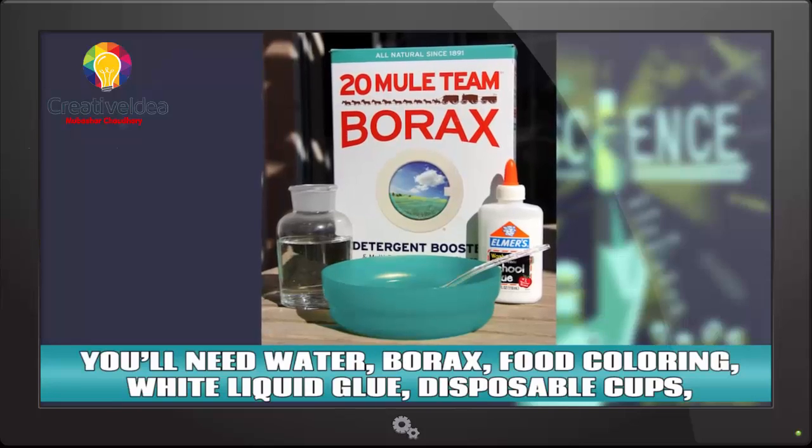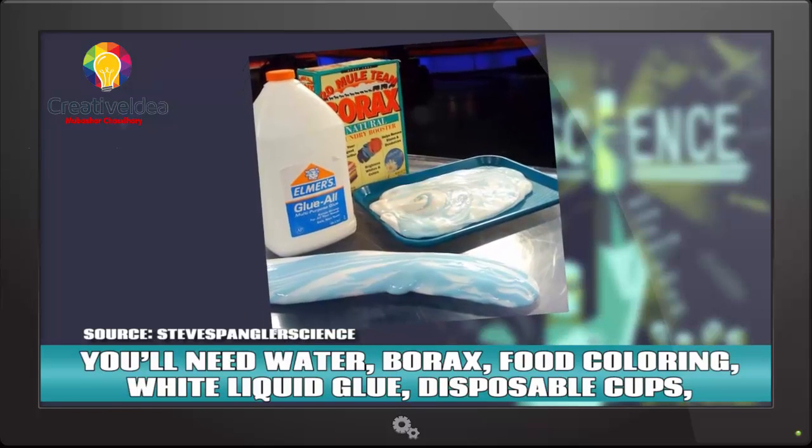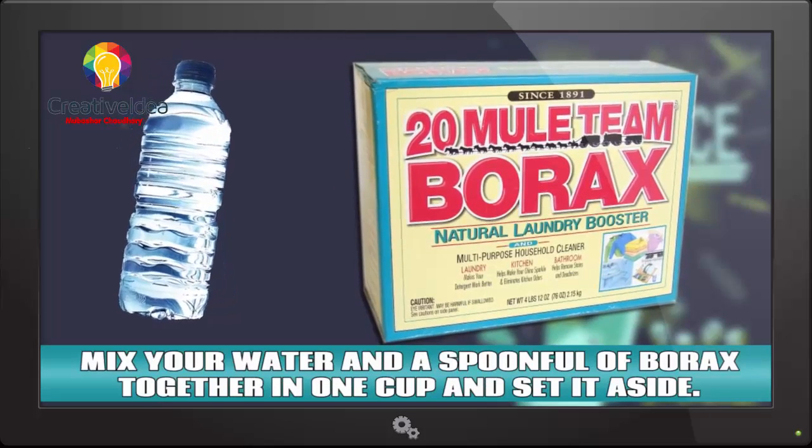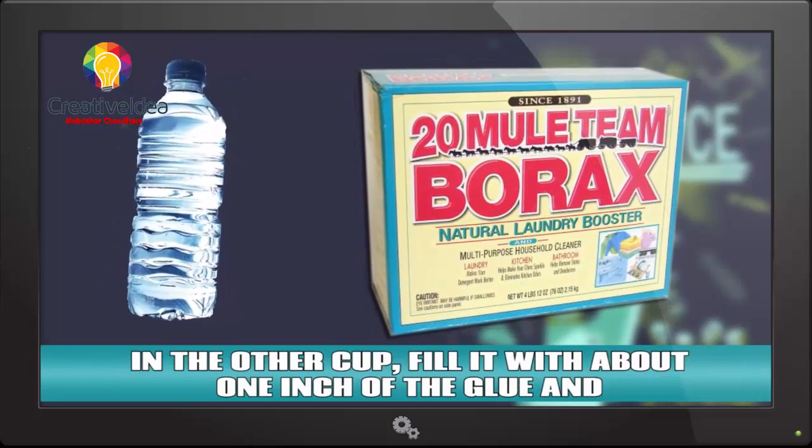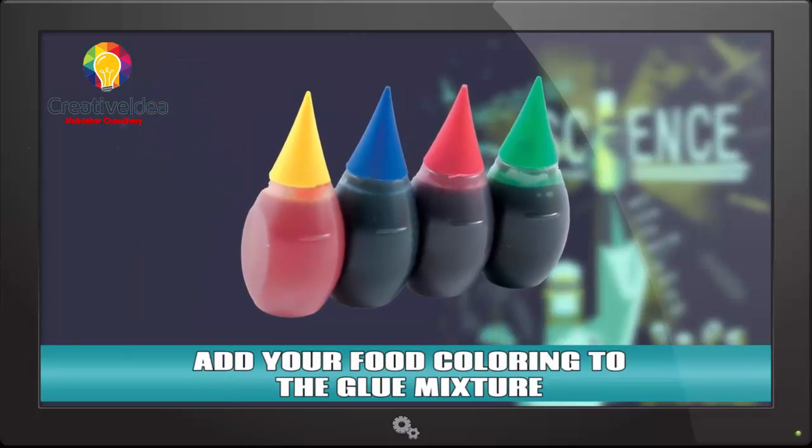Slime! You'll need water, borax, food coloring, white liquid glue, disposable cups and a couple of spoons. Mix your water and a spoonful of borax together in one cup and set it aside. In the other cup, fill it with about 1 inch of the glue and mix it with 3 tablespoons of water. Add your food coloring to the glue mixture.